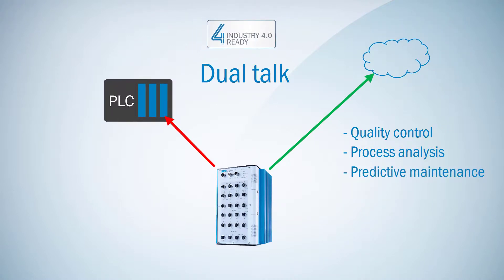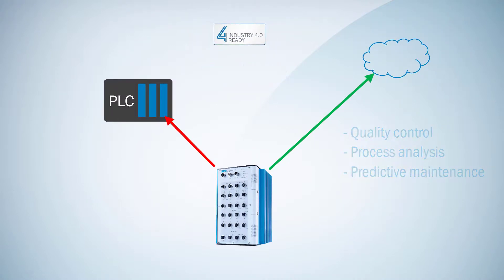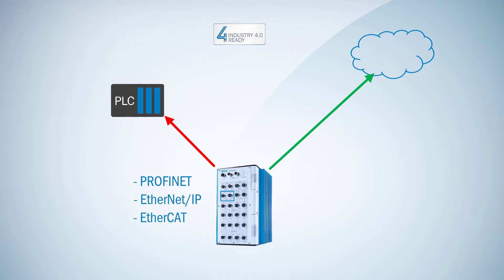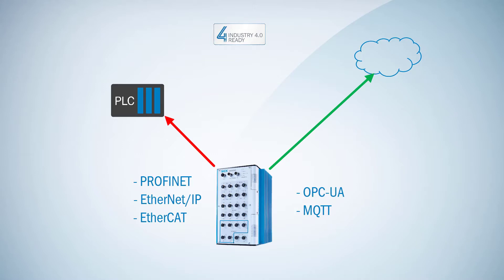For communication to the PLC, the SIM 4000 offers fieldbus protocols: PROFINET, Ethernet/IP, or EtherCAT. Communication to cloud services is available via the Ethernet ports using innovative M2M protocols like OPC UA or MQTT.